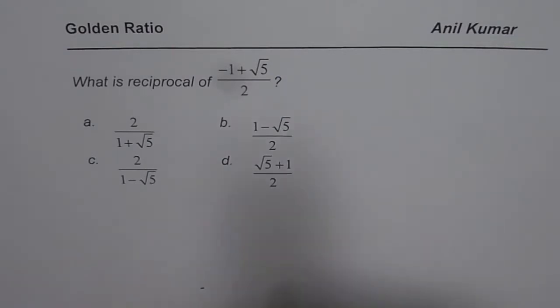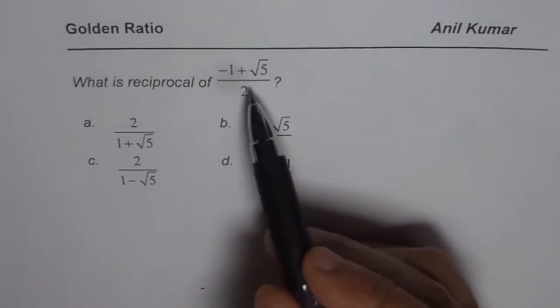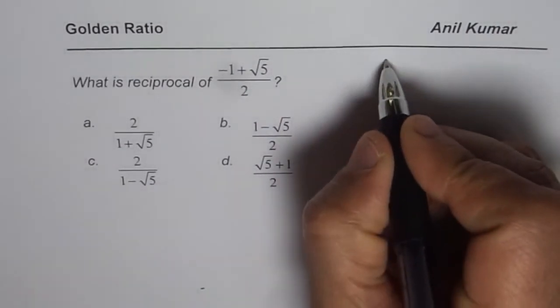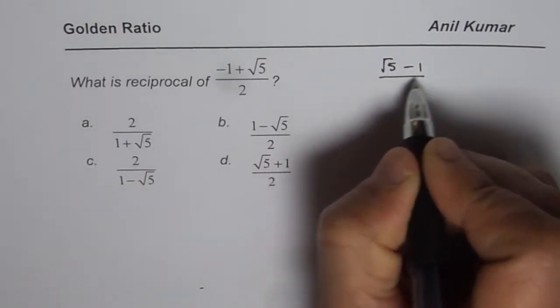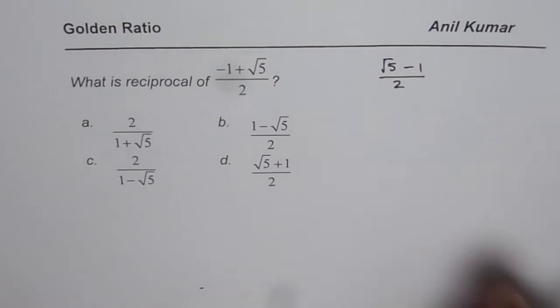Now to find reciprocal of a number, let's begin with the number itself. I could write this number as √5 - 1 divided by 2. So that is the number given to us.